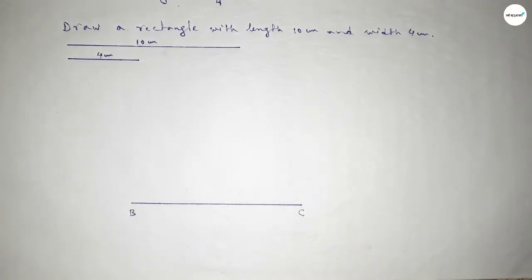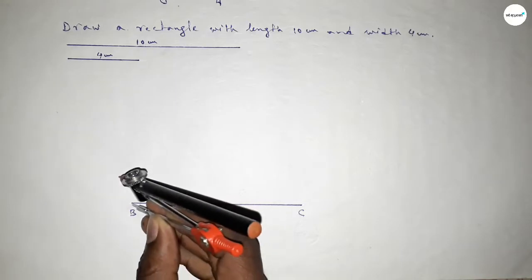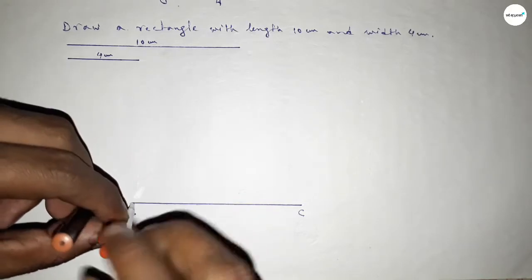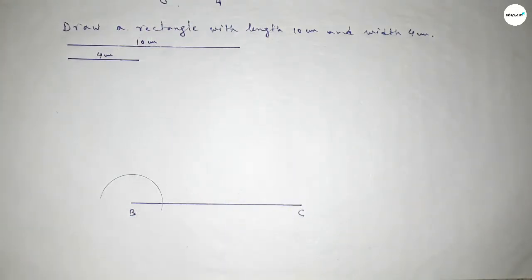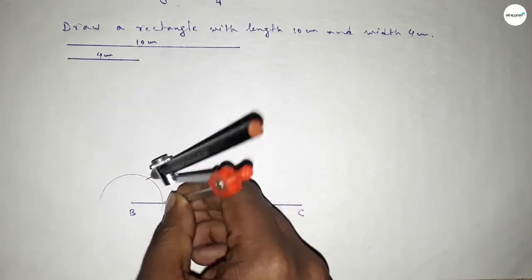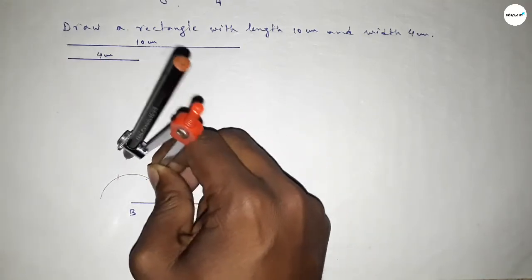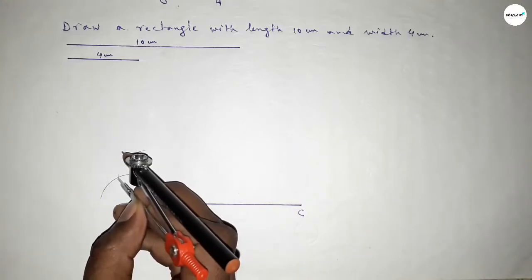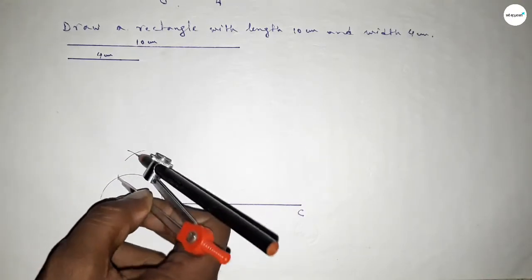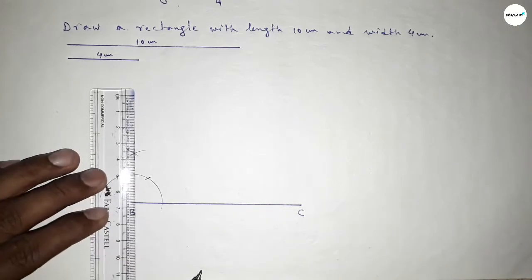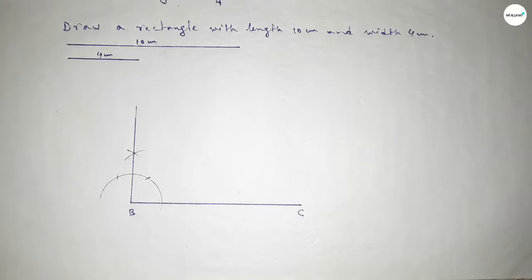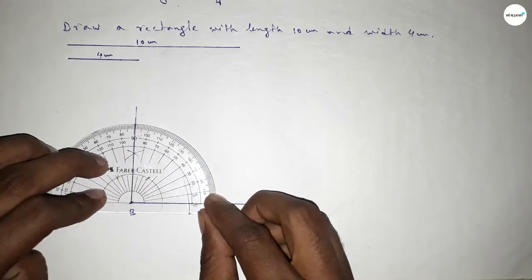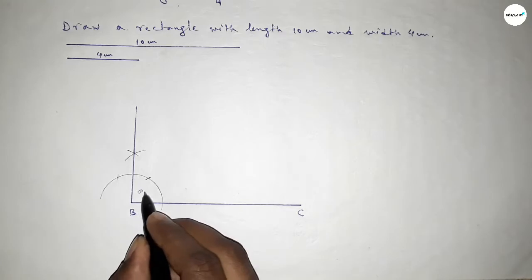Now we have to draw a 90 degree angle on point B. Putting the compass on point B, taking any length and drawing an arc. Then cutting arcs at two positions and drawing another arc with the same length so both curves intersect at a point. Joining the line and checking — this is a perfectly 90 degree angle.